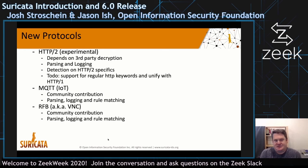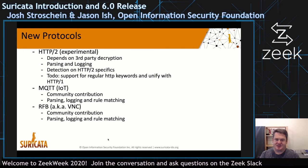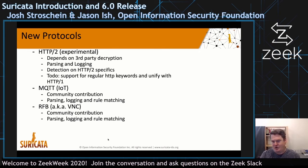New protocols for this release include experimental support for HTTP2, which depends on a third-party decryption device or library — something we're currently working on integrating better. It includes parsing and logging of HTTP2 as well as some HTTP2-specific keywords for the rule language. We'll do further work to unify it with HTTP1 so you don't really have to worry about which HTTP version you're seeing on the network.